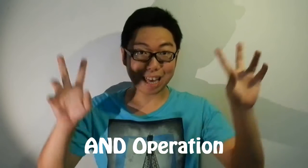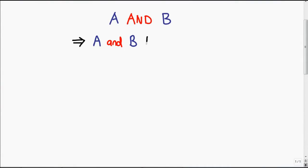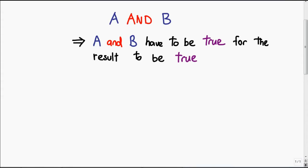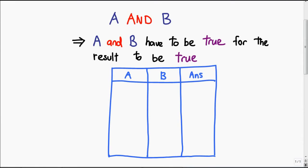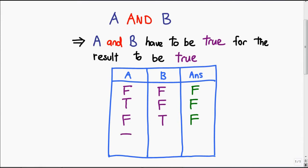The next operation is AND. A AND B means that both A and B have to be true for the answer to be true. In the truth table, false false gives false, true false is still false because you need both to be true, and false true is also false. The only time we can write true in the last column is when both inputs are true — only when A and B are true is the final result true.